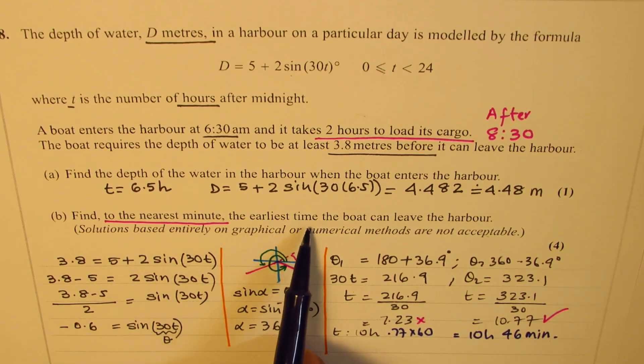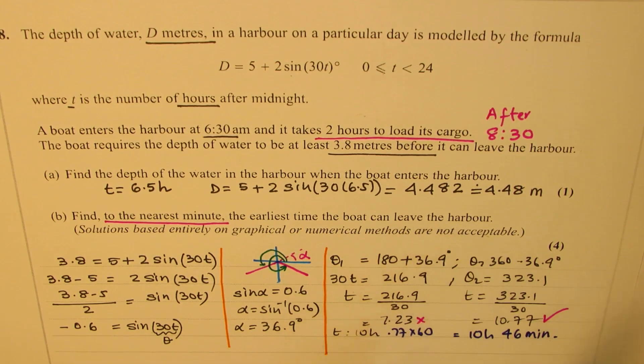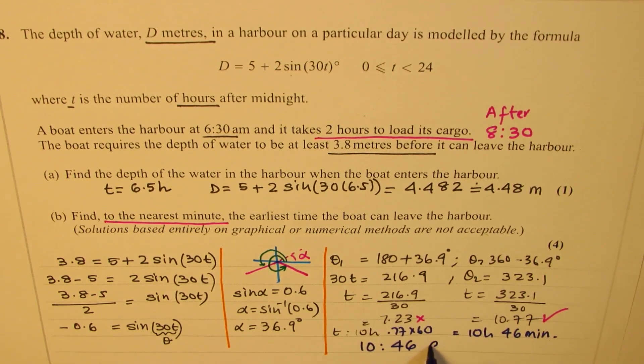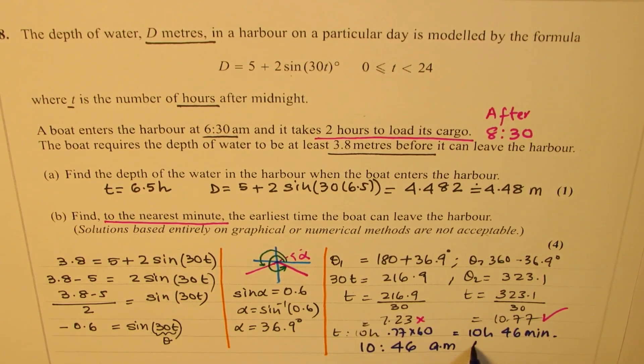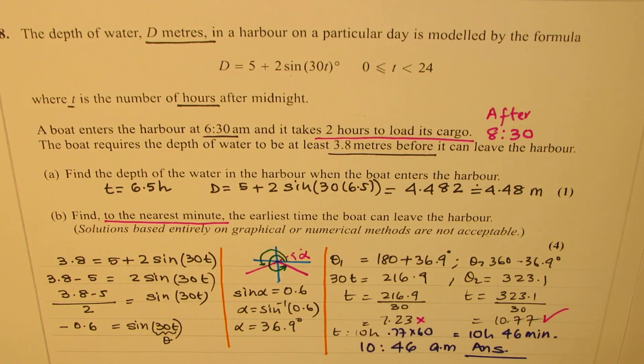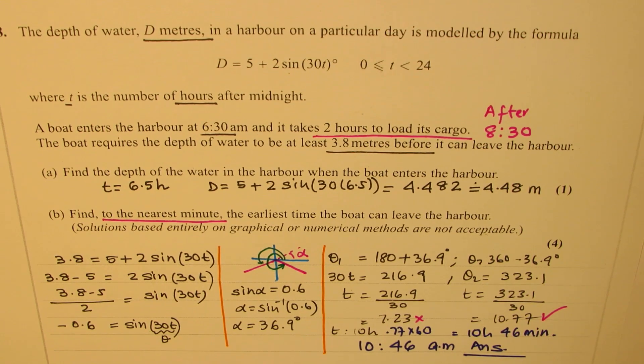This is find the nearest minute, the earliest time the boat can leave the harbor. So it could leave the harbor at 10:46 AM. So that is how we are going to answer this question. Very interesting question which uses many concepts. I hope you find the solution interesting. Feel free to write your comments and share your views. If you like and subscribe to my videos, that would be great. Thanks for watching and all the best.